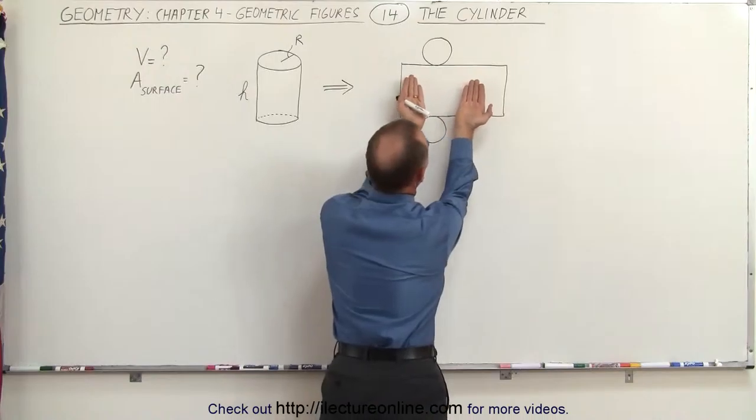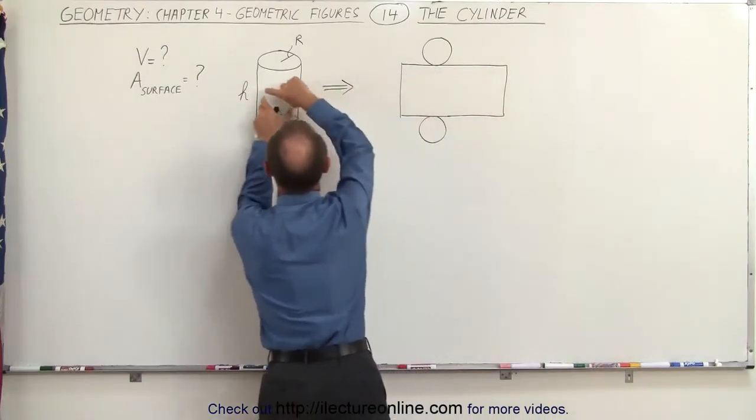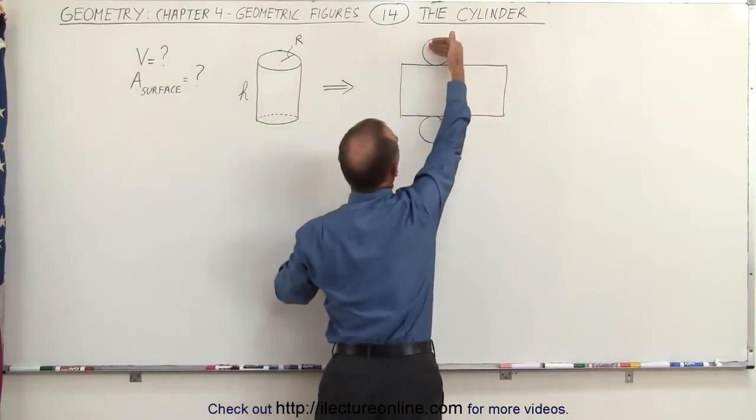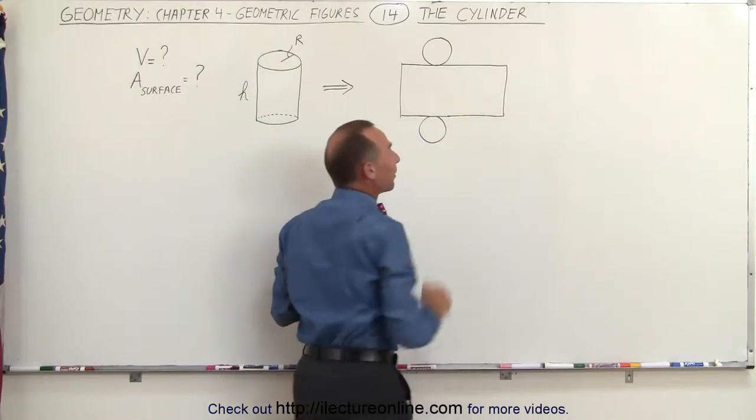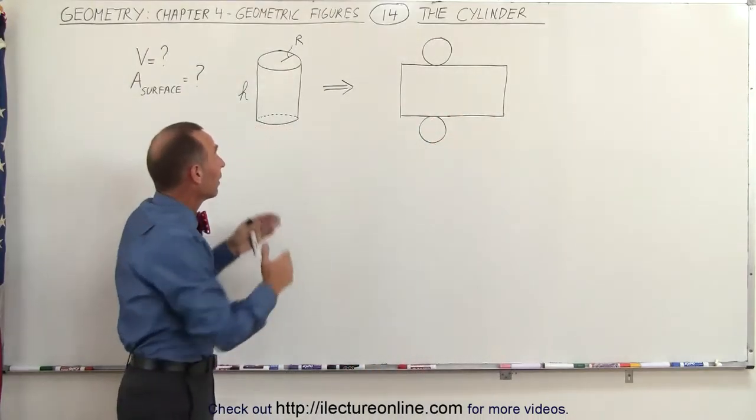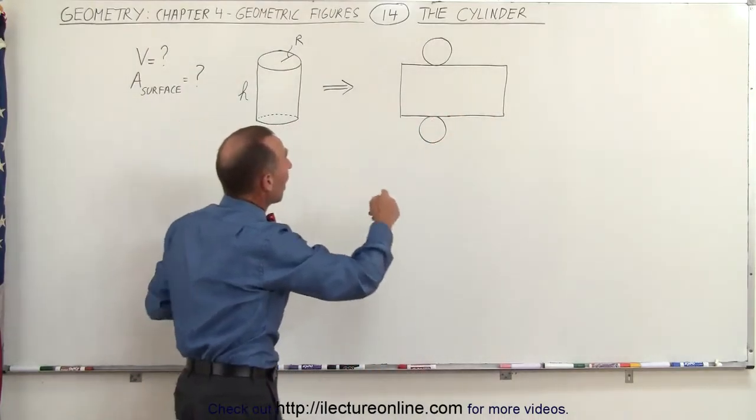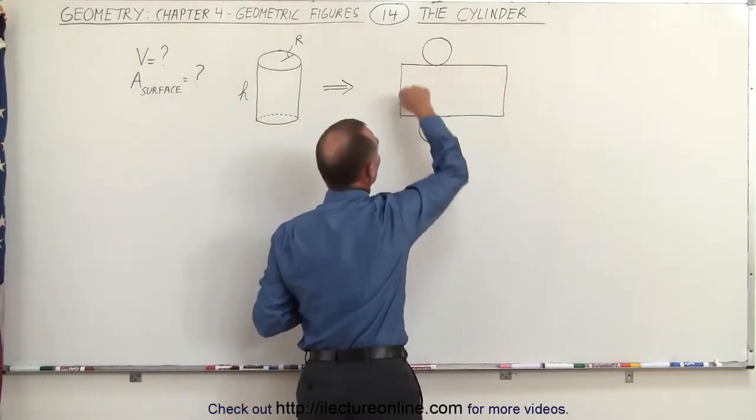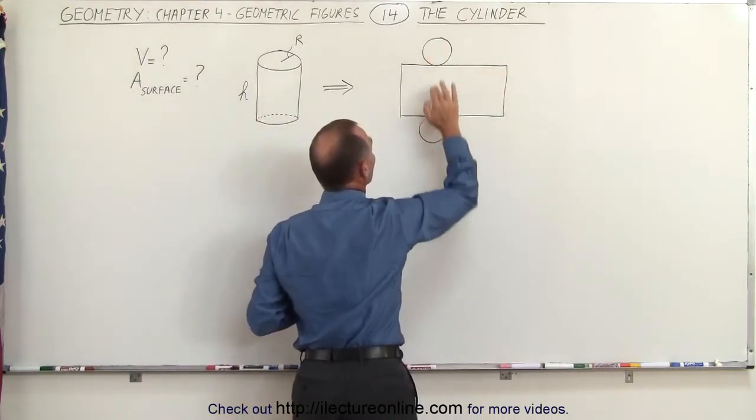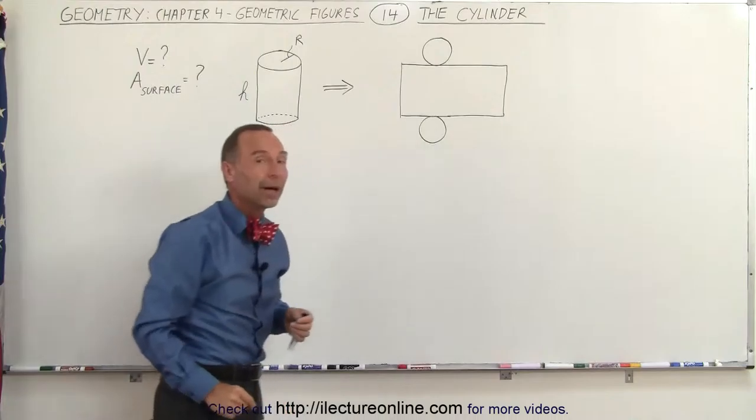And conversely if you then take it and you roll it up you can see that you have the side portion of the cylinder. This would be the top and this would be the bottom of the cylinder. So basically a cylinder is constructed out of a rectangular sheet with two circles attached to it representing the top and the bottom of the cylinder.